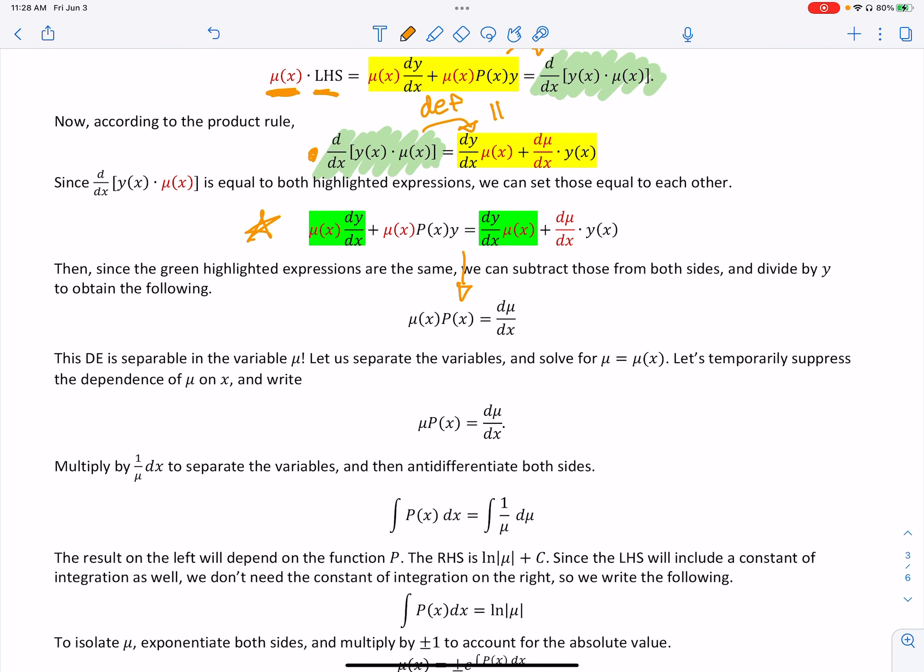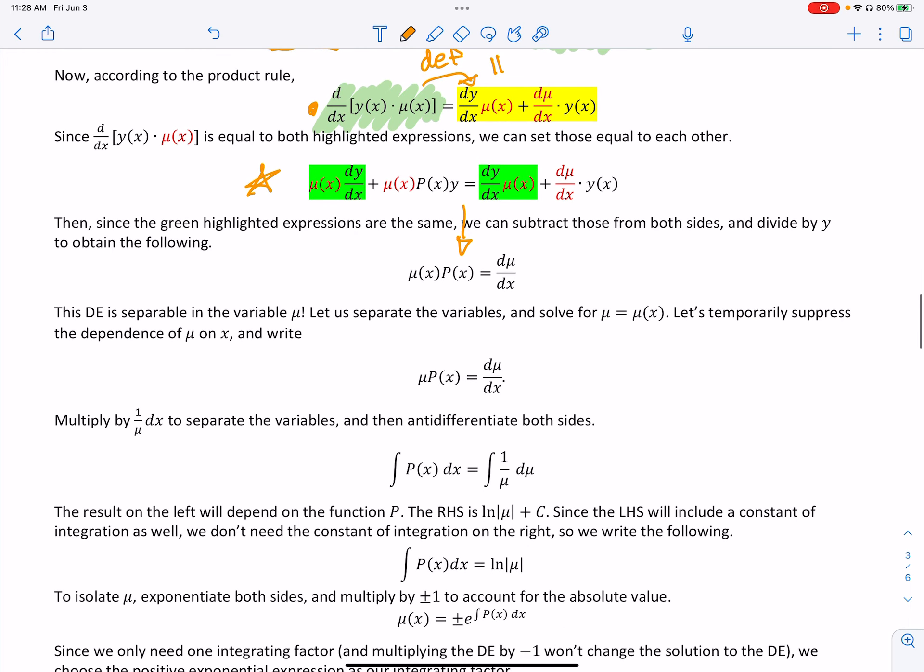I got mu of x times p of x equals d mu dx, right? So we're just going to rewrite it real quick to be a mu. Nothing's changed. All we did is we got rid of these green portions here. That's all we did. We got rid of those. Now we're left with that. Then we rewrote it and we just dropped that of x. That's okay. We can write it that way.